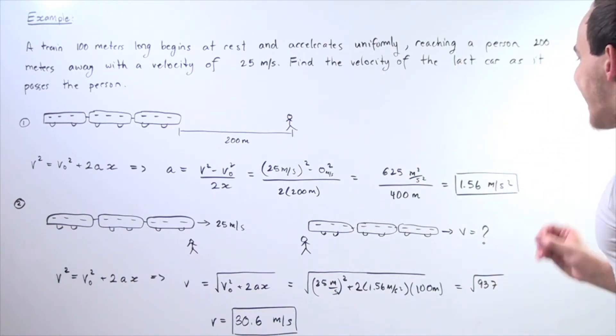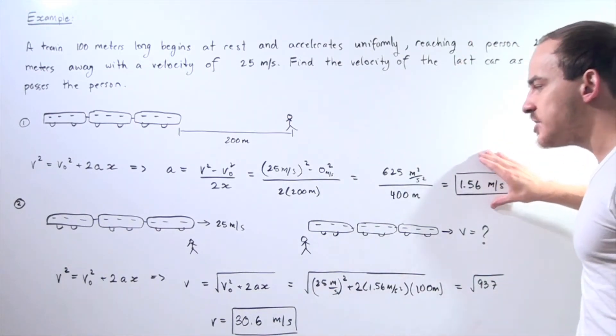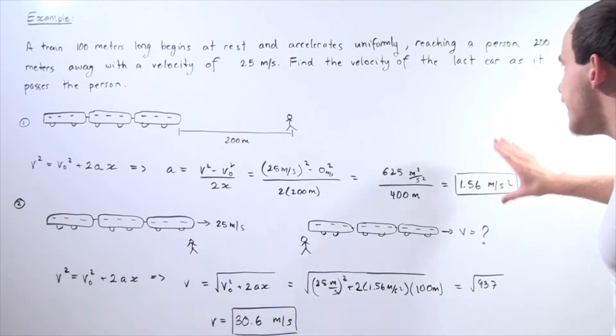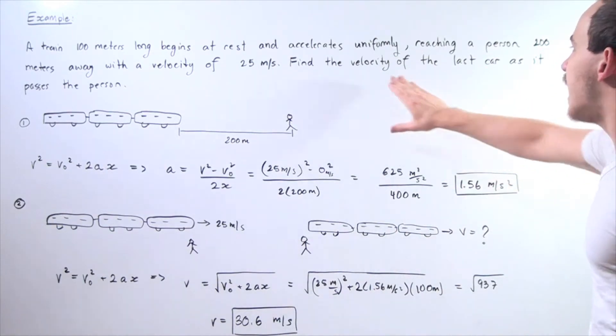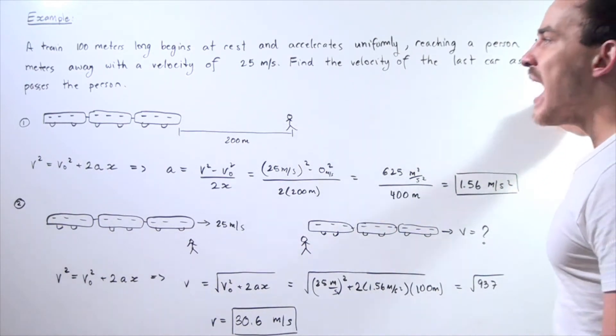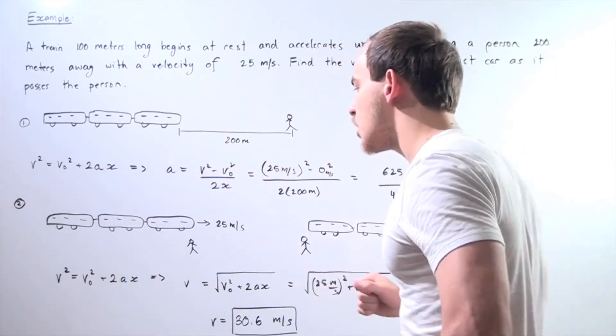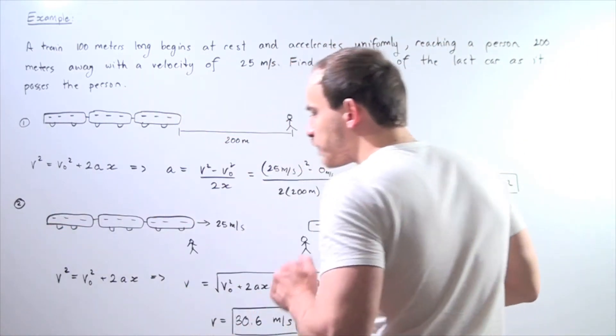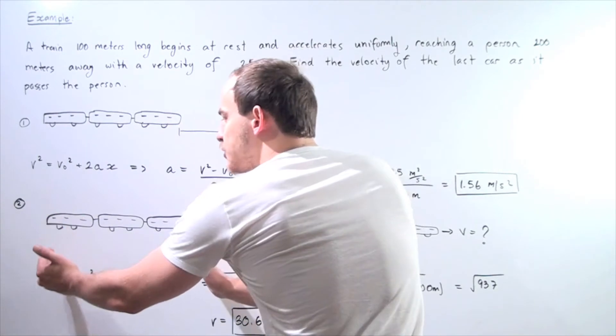So now that we know our acceleration of the train, we can use this information to find our velocity of the last car as it passes our person. So let's go to part 2. So this is our initial situation.